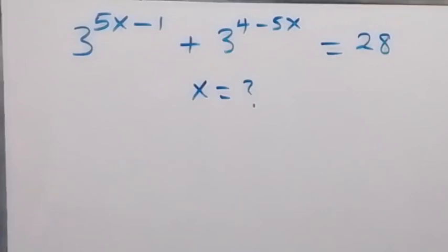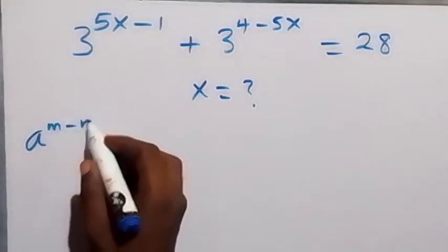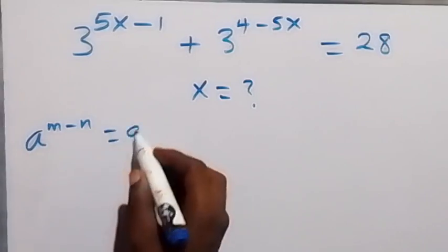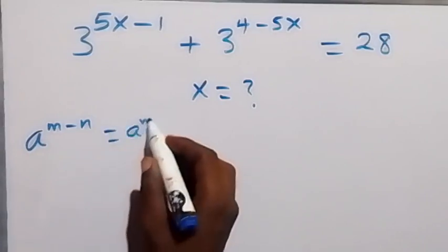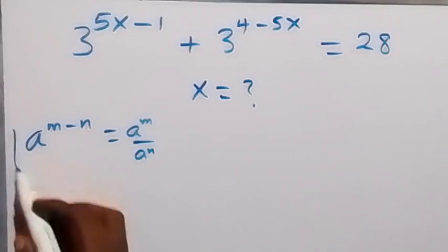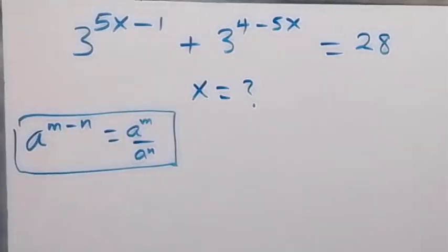Hello, you are welcome. How to solve this nice exponent math problem. From here we apply the law of indices: when we have a raised to power m minus n, we can also write this as a raised to power m over a raised to power n.